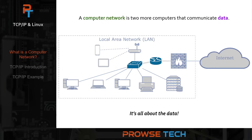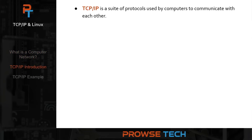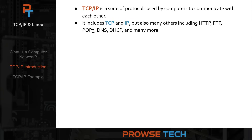But we need a tool to allow us to do that — enter TCP/IP. TCP/IP is a suite of protocols used by computers to communicate with each other. It includes the TCP and IP protocols, but also many others, including HTTP, HTTPS, FTP, Secure FTP, POP3 for receiving email, SMTP for sending email, DNS for resolving domain names and host names to IP addresses, and DHCP for handing out IP addresses automatically on a network. But there are many more.